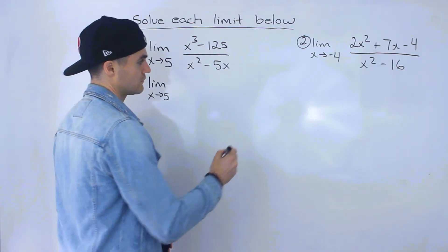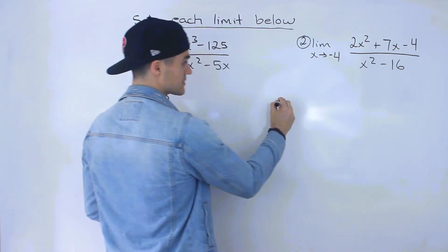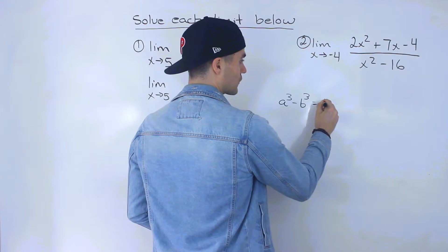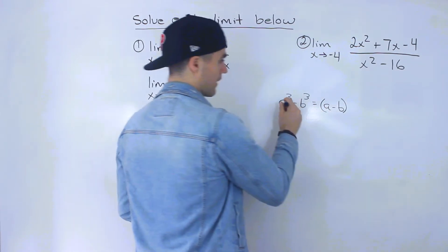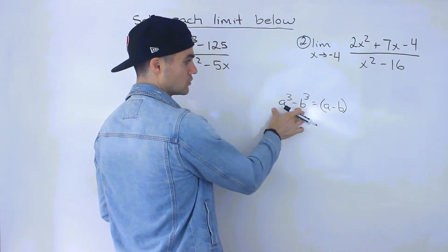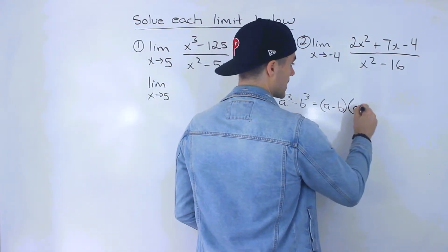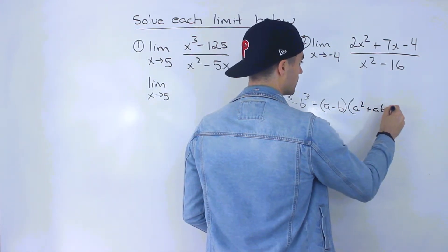So x cubed minus 125, notice that's a difference of cubes. If you remember the difference of cubes formula, if we have a cubed minus b cubed, that's equal to a minus b times a squared plus ab plus b squared.